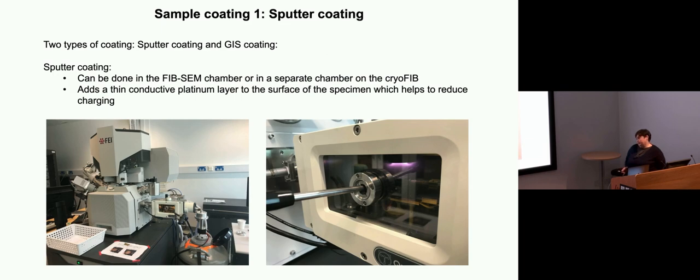This is one of our FIBs we have here. And this is our quorum chamber, which is used partly as an airlock for loading but also has this sputter coater. You can see the nice purple glow and we add a fairly thin layer of platinum. This is important because our samples are insulators, they're ice, they are not very good for the SEM and the milling. This helps to prevent charging.